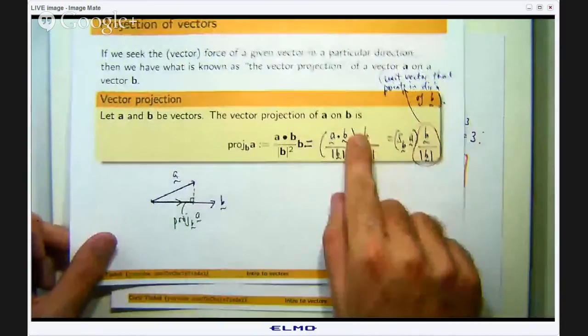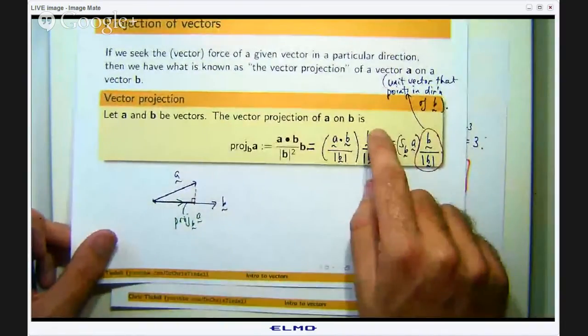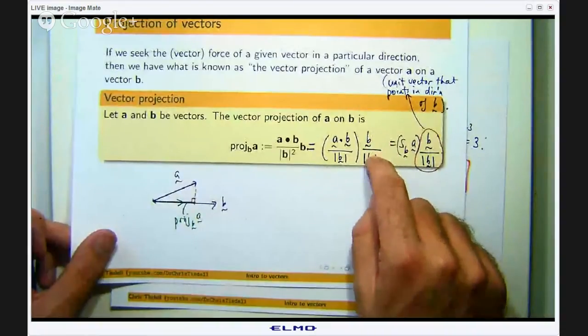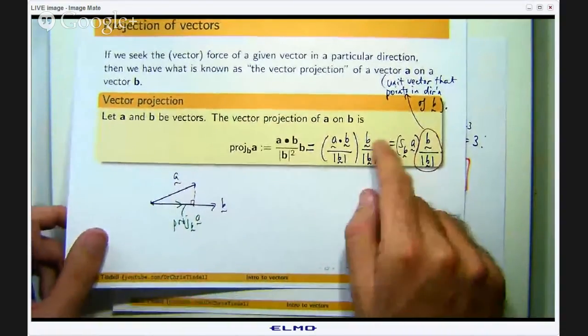The next thing we want to worry about is the vector projection. We have already calculated this part. All we need to do is take the vector B, divide it by its length and then multiply these two things together.